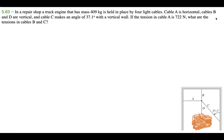In a repair shop, a truck engine with a mass of 409 kilograms is held in place by four light cables. Cable A is horizontal, cables B and D are vertical, and cable C makes an angle of 37.1 degrees with a vertical wall. If the tension in cable A is 722 newtons, what are the tensions in cables B and C?